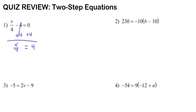Our second step is to undo multiplication or division. Since v is being divided by 4, we have to multiply both sides by 4, because we undo division with multiplication. On the left, the 4 is cancelled out, leaving us with v. And on the right, 4 times 4 is 16.